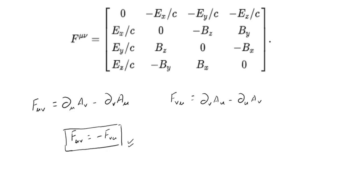In the case of an anti-symmetric tensor, one element has to be the minus of the other, so all diagonal terms turn out to be zero. You can understand this intuitively: suppose you have some term c, then minus c equals c only when c equals zero. That's why all the diagonal terms in the electromagnetic field tensor are zero. If we do a thorough calculation, all the corner terms turn out to be electric field terms and the remaining terms are magnetic field terms.